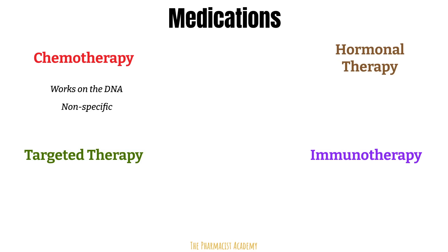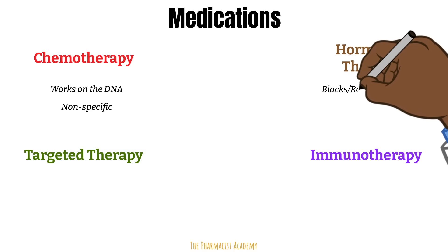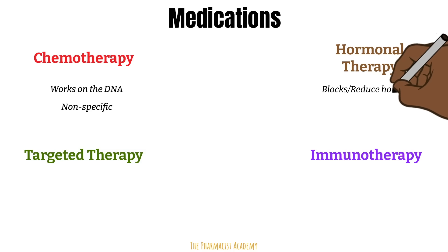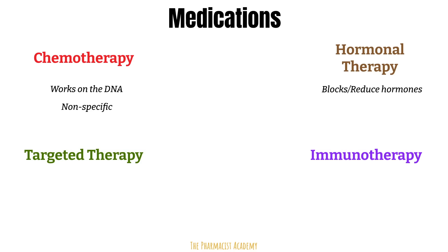Some cancers depend on hormones to grow — examples include breast and prostate cancer. Hormonal therapy aims to block or reduce these hormones. So in breast cancer, we are blocking or reducing the amount of estrogen and progesterone, and in prostate cancer, it's testosterone.